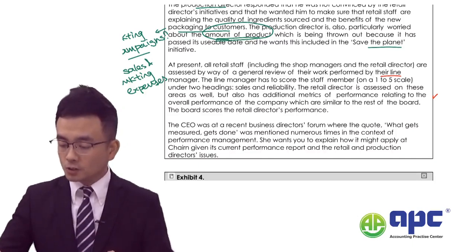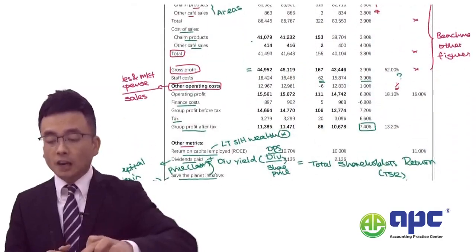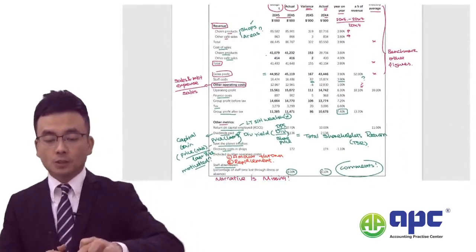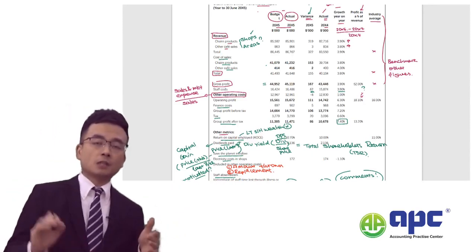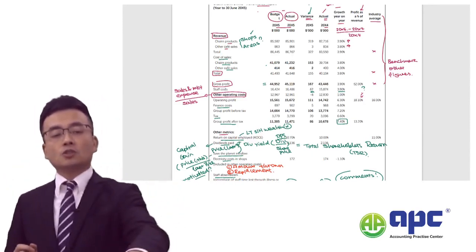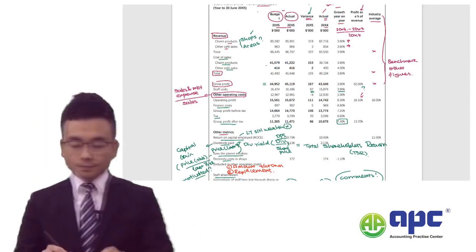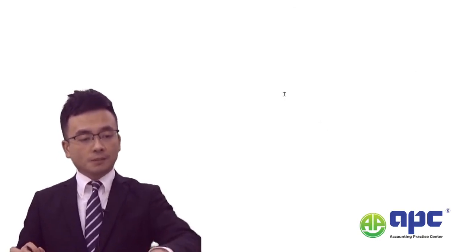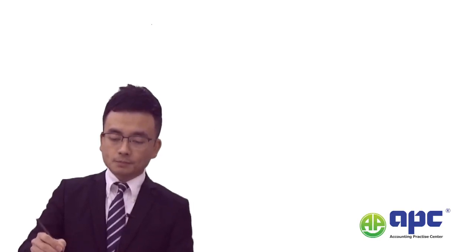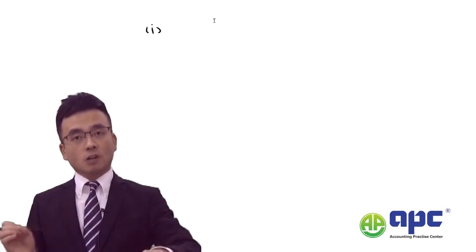The CEO was at a recent business directors' forum where the quote 'what gets measured gets done' was mentioned numerous times in the context of performance management. She wants you to explain how this might apply at the company given its current performance report and the retail and production directors' issues. We will answer part two in the next recording. I have summarised all the key points, and the next step is to use a standardised approach to answer when criticising or evaluating the performance report.